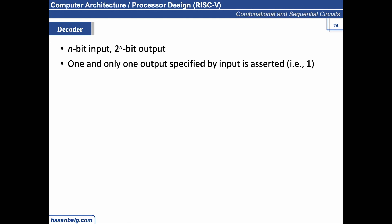Decoder has some characteristics, which is it contains n-bit input and it produces 2 to the power n-bit output. For example, if I have one input, then I will have 2 to the power 1 output lines, means two lines. And out of all the outputs, only one of the output will be set to 1.